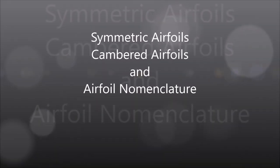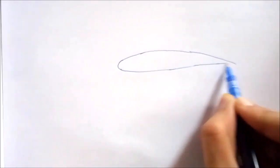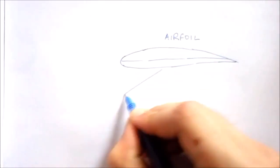Symmetric airfoils, cambered airfoils. What are these terms? Let's check it out. So the word airfoil refers to the cross section of the wing. These airfoils are broadly categorized into two, namely symmetric airfoil and cambered airfoil.